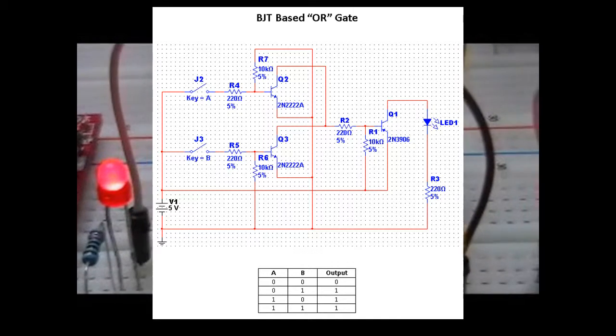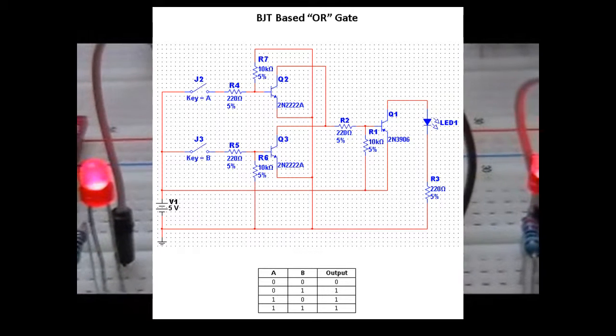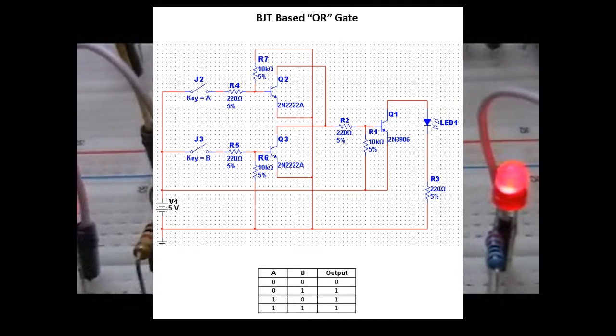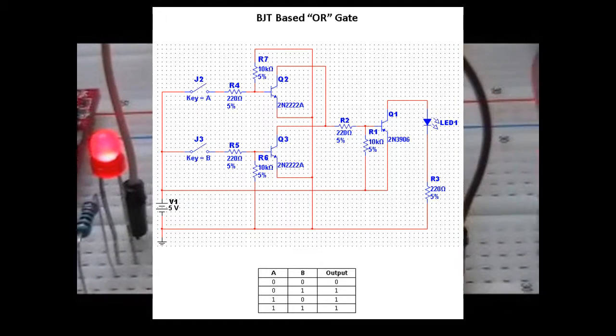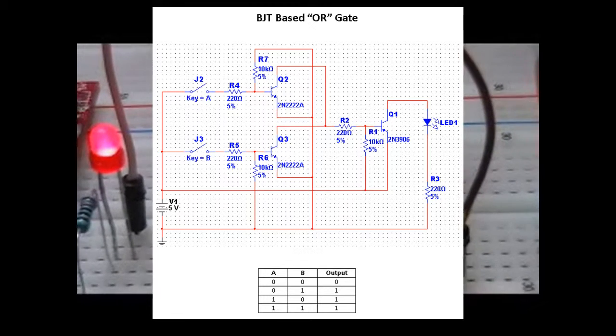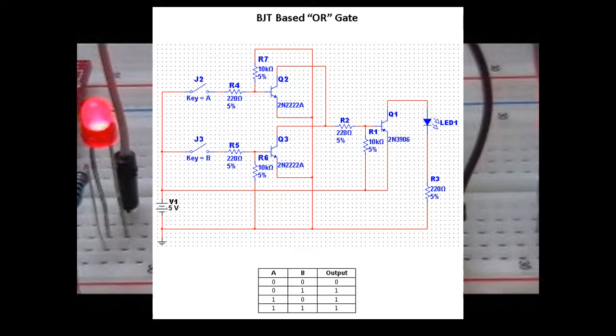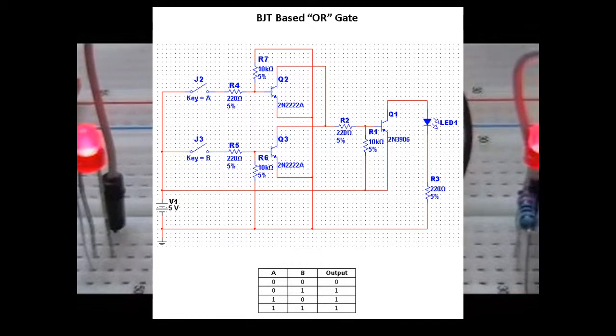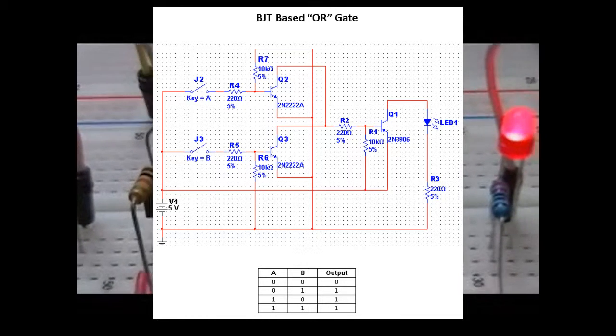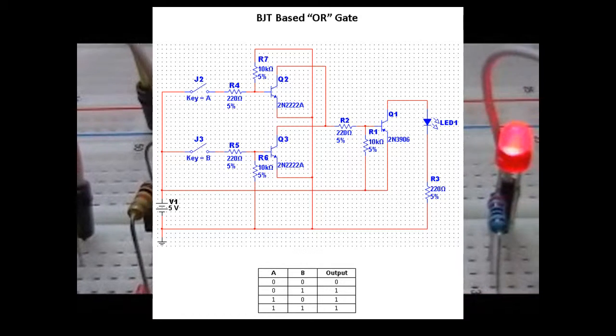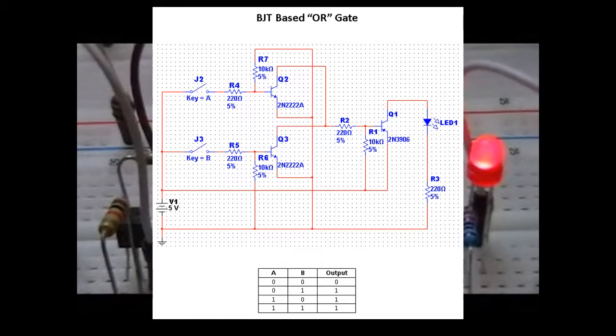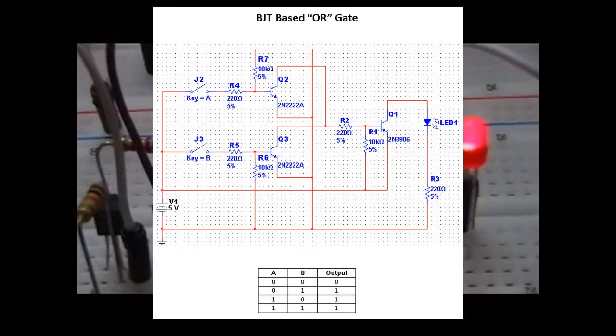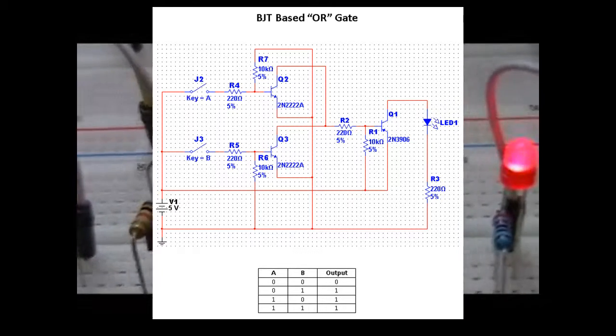So when either J2 or J3 is closed, or both, the individual transistors will see a positive voltage on the base being NPN. They will begin to conduct, and they will expose the base of Q1 to a ground condition through the 220 ohm resistor. That ground condition will then basically turn that transistor on. Q1 will go on and provide positive 5 volts to the anode of the LED, and then that'll travel through the 220 ohm resistor back to ground, turning on the circuit.